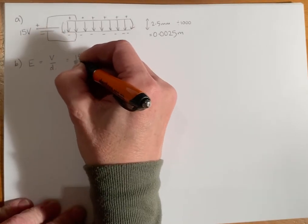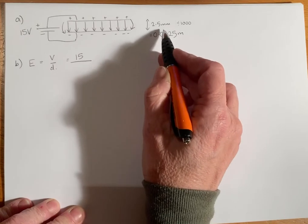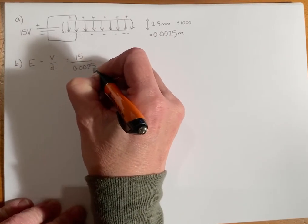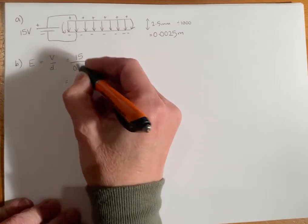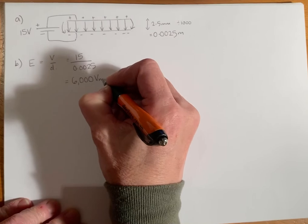So that's 15, we've given that in the question, and we've already converted our distance in millimeters to meters. So there is our calculation, and when you work that out you should get 6,000 volts per meter.